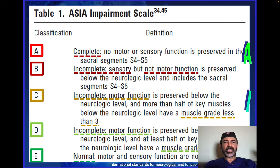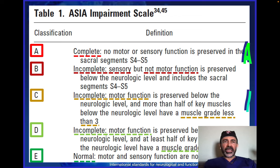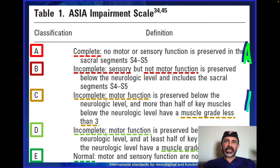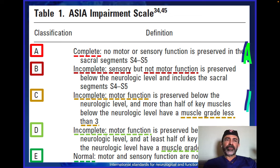You can also use the ASIA Impairment Scale, which is the equivalent of a Glasgow Coma Scale for head trauma — ASIA for spinal trauma — and it's extremely useful and important to be used. We classify AIS A as complete when there is no motor or sensory function at the level of the spinal cord injury and below. AIS B when there is some sensory preservation but no motor. AIS C and D when there is some motor preservation: AIS C up to grade 2 of movement, so the patient can move but not against gravity; AIS D able to move against gravity but still weak; and AIS E when there is normal motor and sensory function.